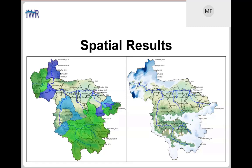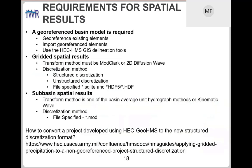On this slide, on the right is the gridded representation of spatial results. If you have a structured discretization of 2,000 meters, you can see those results at that resolution. If you're not doing gridded modeling but still want to use spatial results, the figure on the left shows that the program can also display results at the subbasin scale.